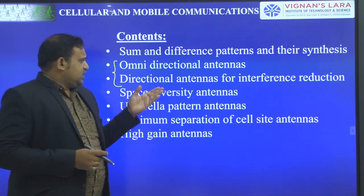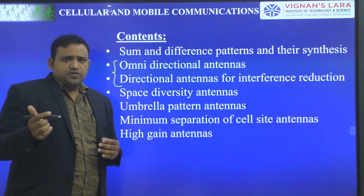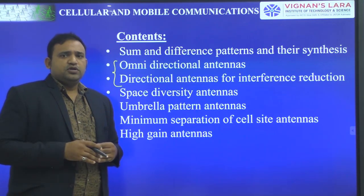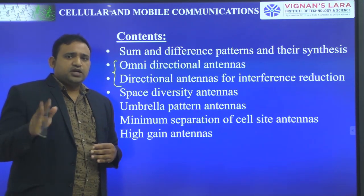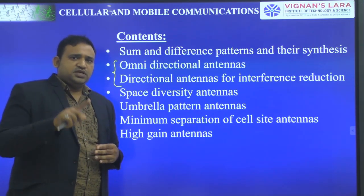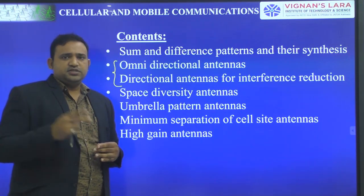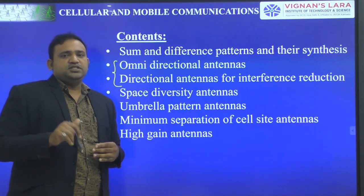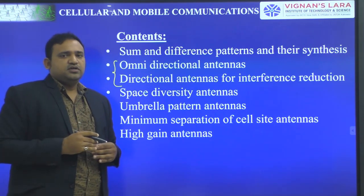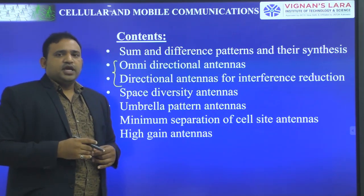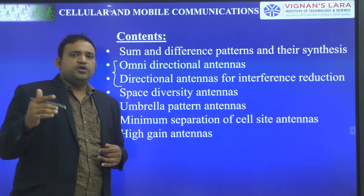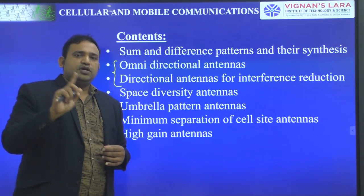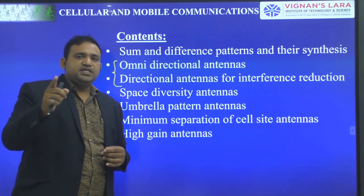For directional antennas, we discussed K equal to 7 with a 120-degree sector. Next, for K equal to 4, 60-degree sector, two approaches: one is the receiving and transmitting 60-degree antennas, and the other is only receiving 60-degree antenna. Also K equal to 7, 120-degree sector using two transmitters and two receivers — and we can use only one transmitter because of the desensitization problem.